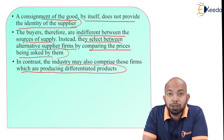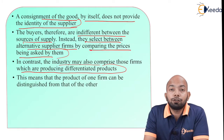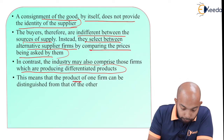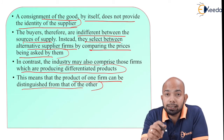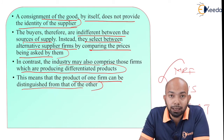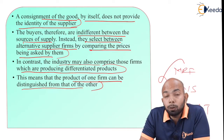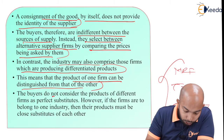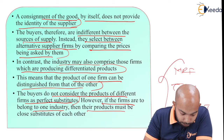In contrast, an industry may also comprise firms which are producing differentiated products — different firms producing different products. This means that the product of one firm can be distinguished from that of the other. Just like the tire example — you can absolutely distinguish how MRF tires are different from TVS tires or CEAT tires. These companies have different kinds of tires, but the product itself is a tire, so there is a homogeneous product with different types and categories available.